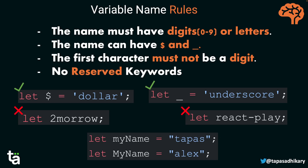What about `myName` versus `MyName`? Both are technically valid since they satisfy all the rules, but they are completely two different variable names because JavaScript is case-sensitive. A capital 'M' versus a small 'm' means these are two different storages with two different names. Cases matter.